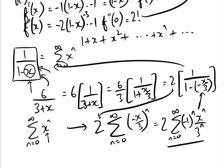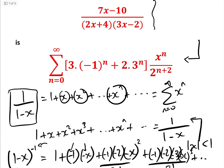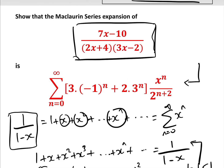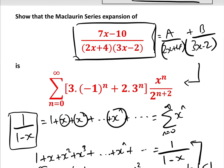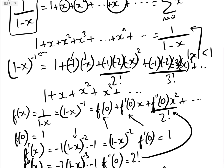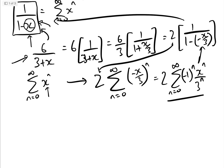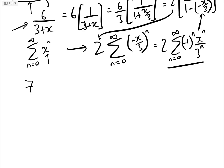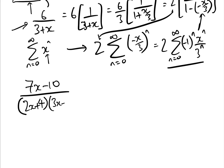That's exactly what we're going to do with our partial fraction. So let's go back to our problem: (7x − 10) / ((2x + 4)(3x − 2)). The first thing we need to do is split that into partial fractions, so we write A/(2x + 4) + B/(3x − 2), and we need to find A and B. Then we'll use that method to convert each into a Maclaurin series.